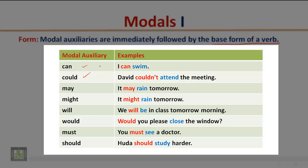Could — David couldn't attend the meeting. May — It may rain tomorrow. Might — It might rain tomorrow. Will — We'll be in class tomorrow morning. Would — Would you please close the window? Must — You must see a doctor. Should — Huda should study harder.